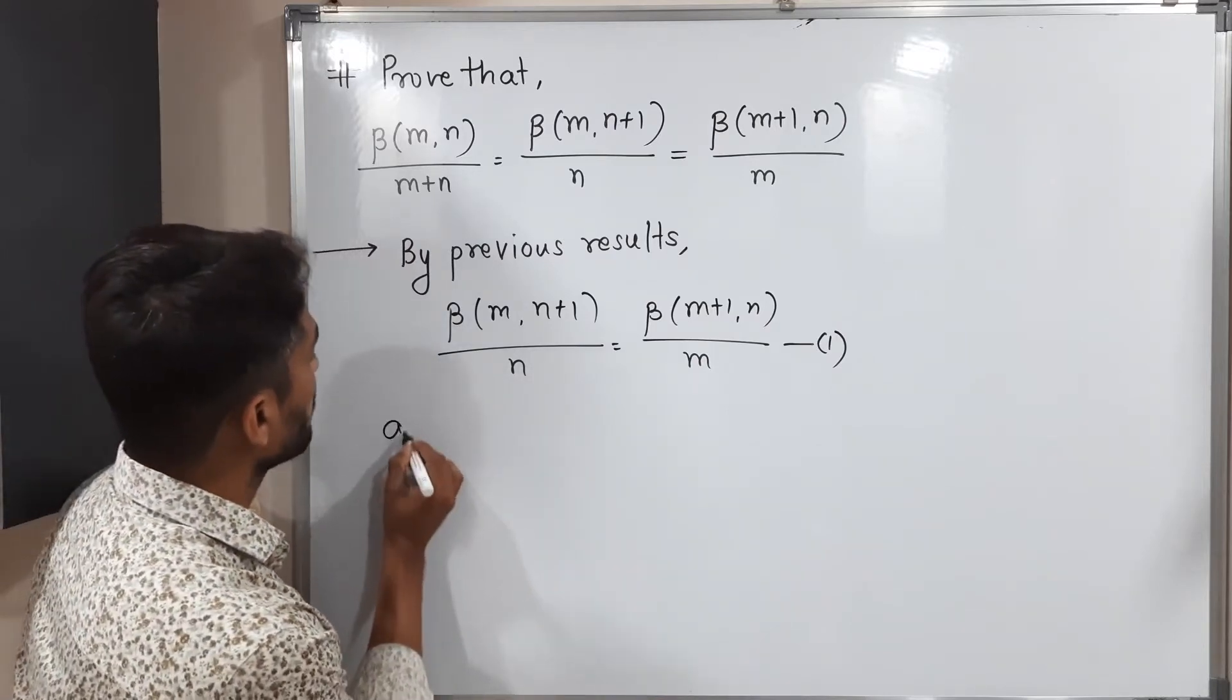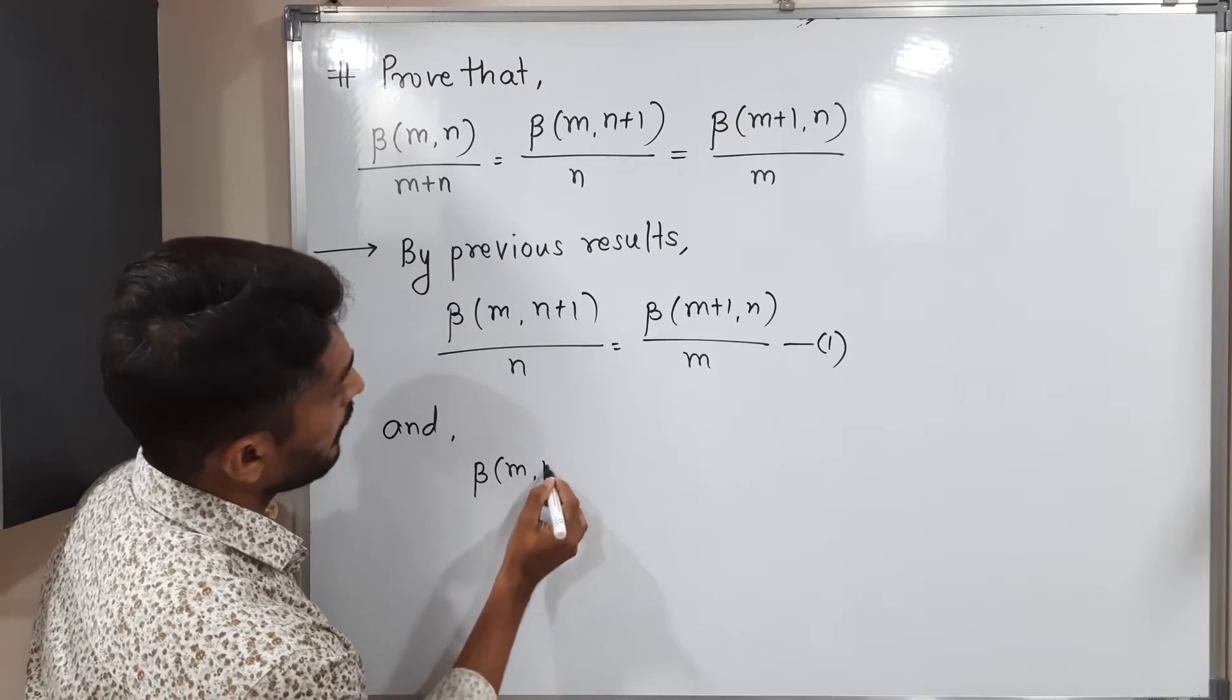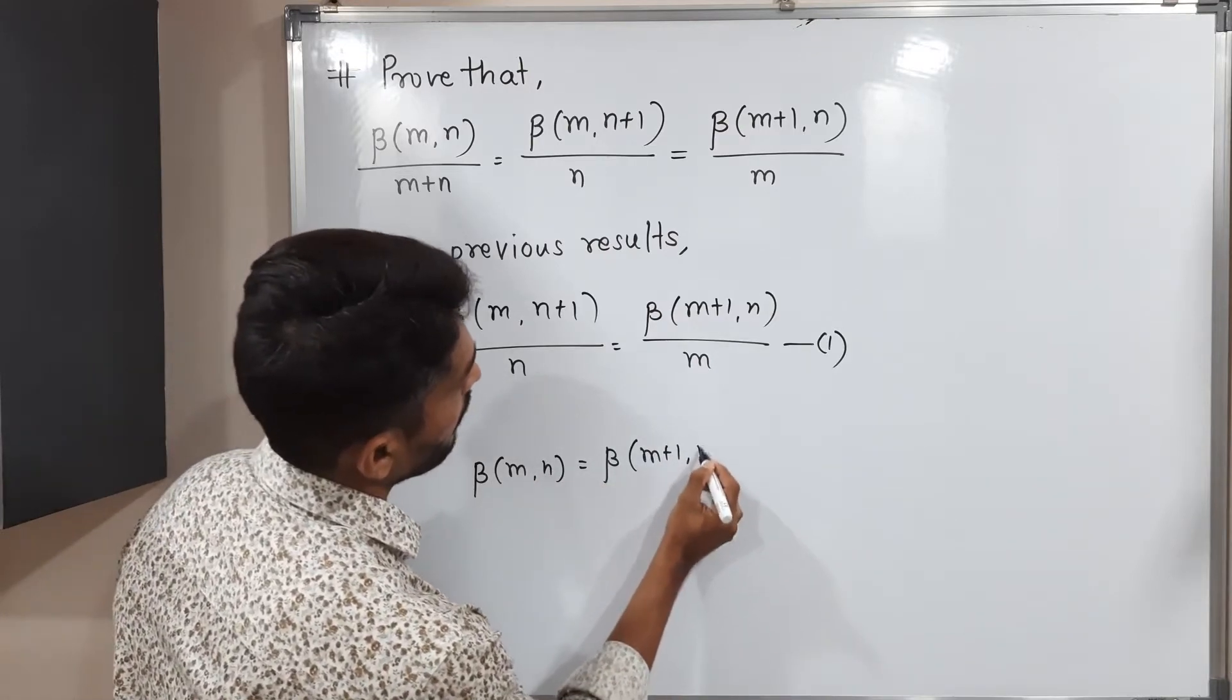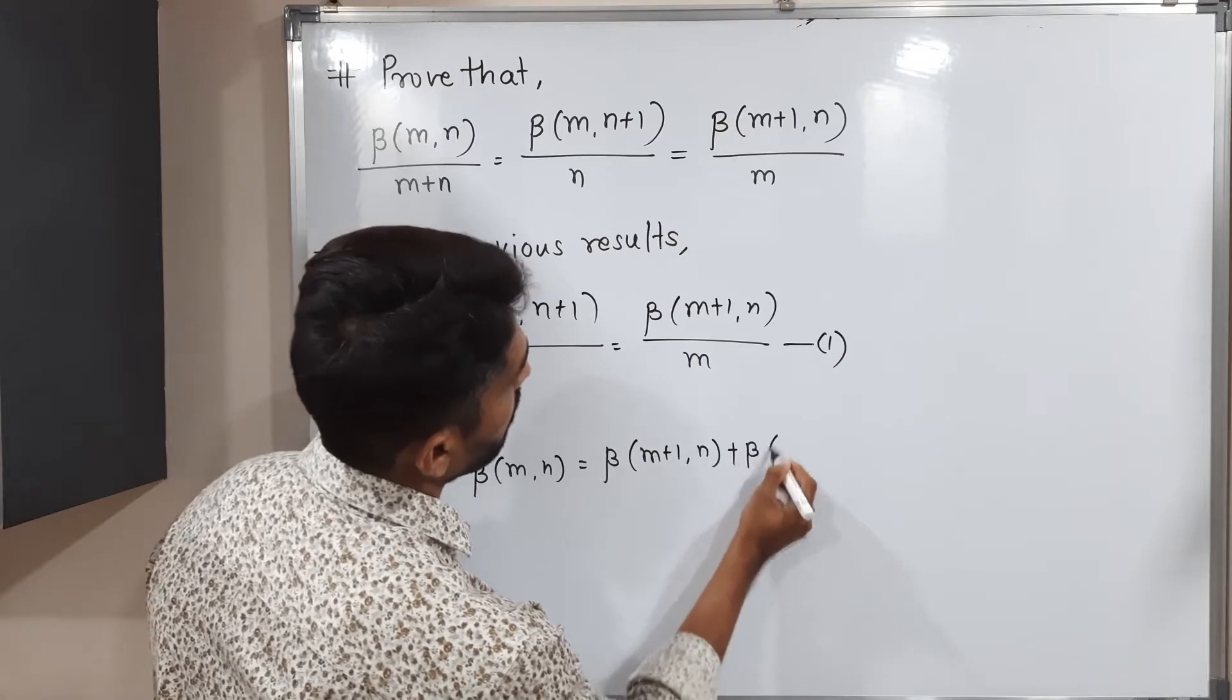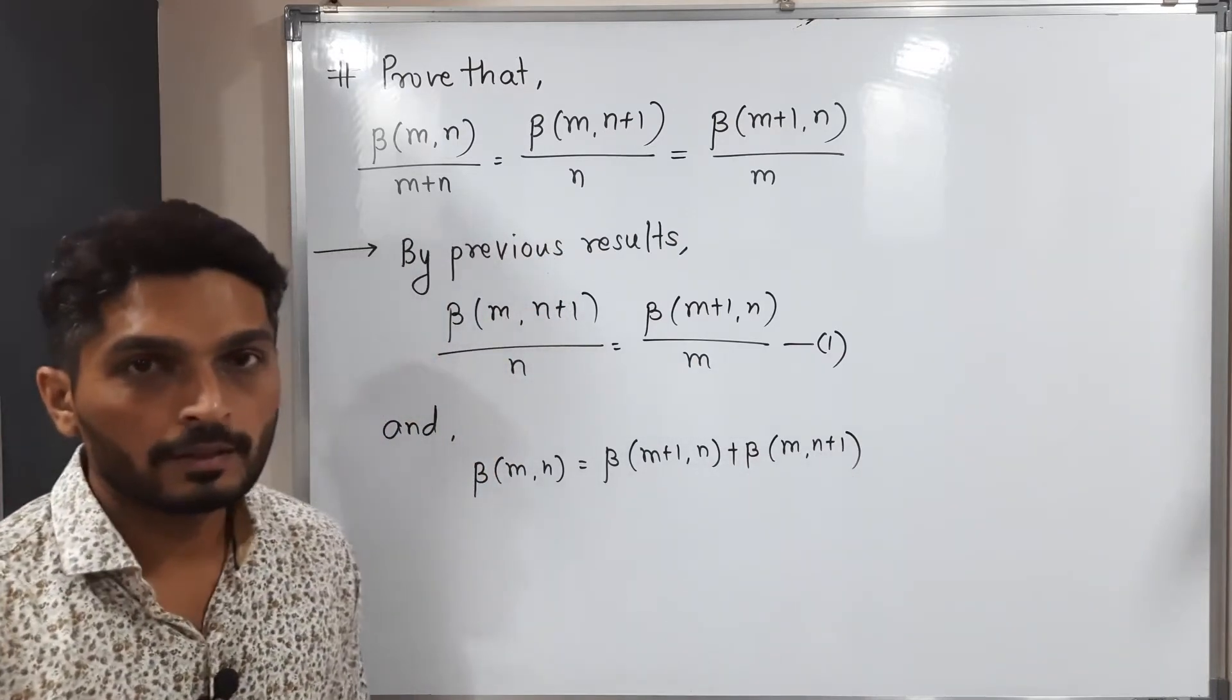We write: beta of m, n is equal to beta of m+1, n plus beta of m, n+1. This one also we have already proved.